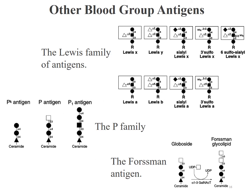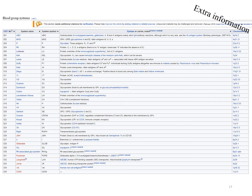Aside from the ABO blood group system and the rhesus factor, there are also other types of antigens on the surface of red blood cells, such as the Lewis family, the P family antigen, and the Forssman antigen. The common feature is variability in the surface oligosaccharides — different types of sugars are attached on the antigen surface, inducing different antibody generation. According to Wikipedia, there are at least 35 different types of antigens, but they are less important because they are less likely to cause trouble during blood transfusion.